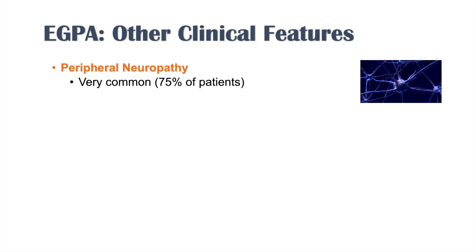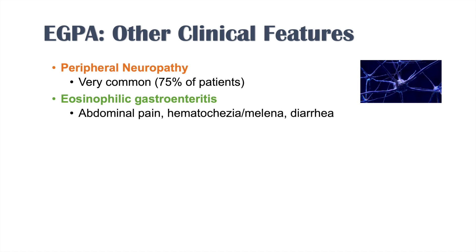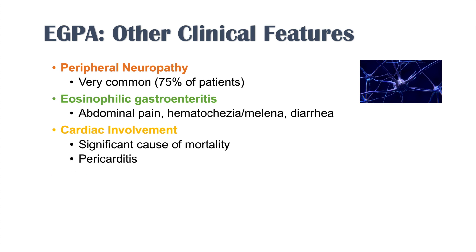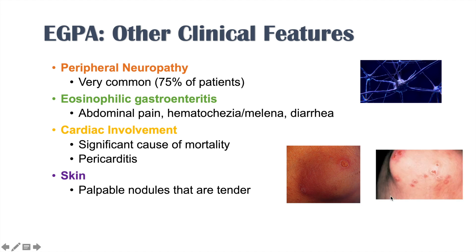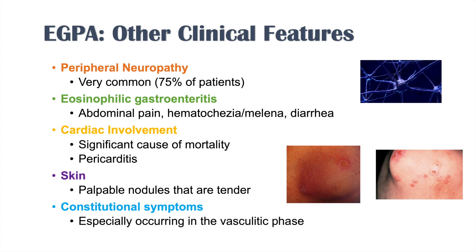Peripheral neuropathy is also very common, seen in about three-quarters of patients. Eosinophilic gastroenteritis can cause abdominal pain, hematochezia, melena (GI bleeds), and diarrhea. Cardiac involvement — including pericarditis and myocarditis — is probably the most significant cause of mortality. Skin involvement is the second or third most common system affected, presenting with palpable tender nodules and other skin lesions such as macules and patches. Constitutional symptoms like fever, weight loss, and fatigue occur especially in the vasculitic phase.